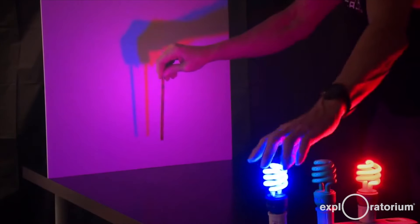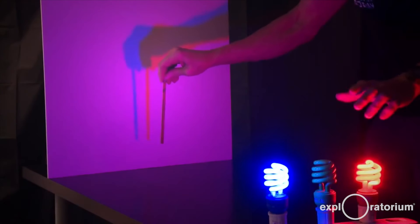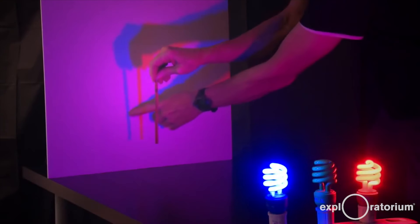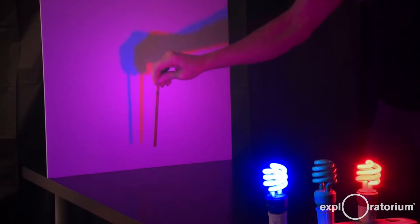And over here, this is the shadow from the blue light. The blue light is in a different position, so it fills in the shadow from the red light. And the red light fills in the shadow from the blue light. That's why we have red and blue shadows in a magenta board.